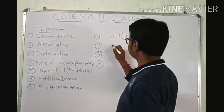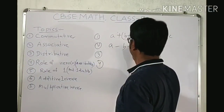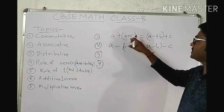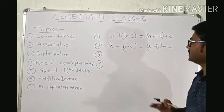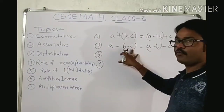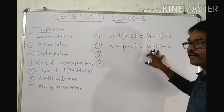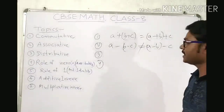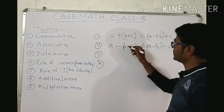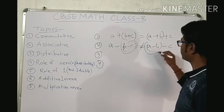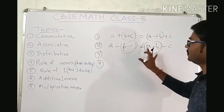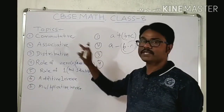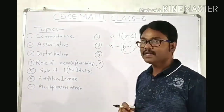Next, suppose A, B, C are three rational numbers. Consider A minus (B minus C) and (A minus B) minus C. If you associate the grouping differently under subtraction, the value is not the same. Therefore, subtraction is not associative for rational numbers.